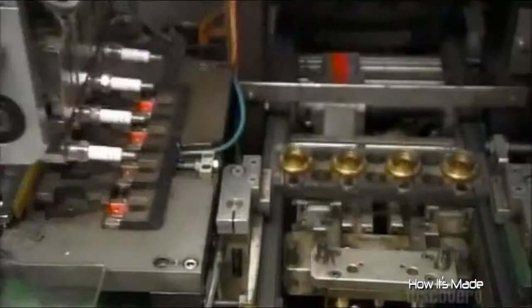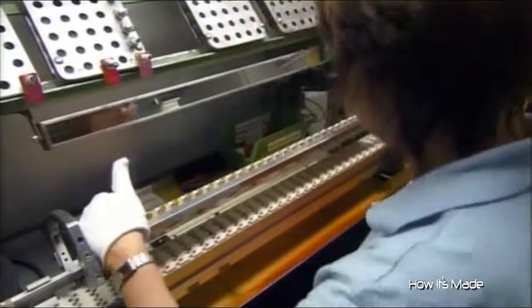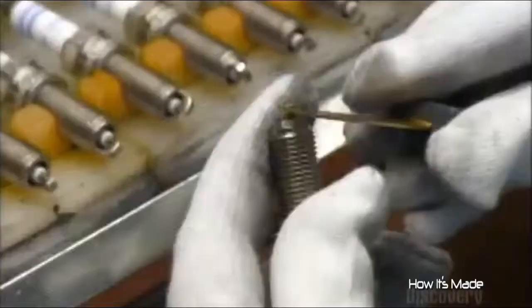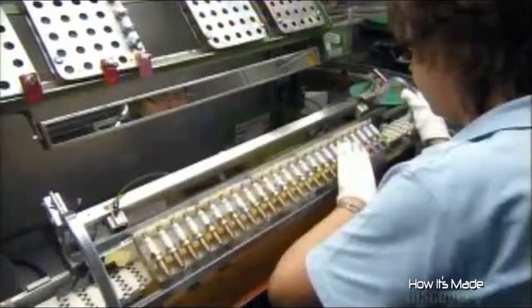The robot then collects the spark plugs and sends them down the line. It's time for an inspection. She looks for imperfections in the glaze, the inscription, and the nickel plating. She measures the space between the two electrodes before sending them over to the packaging department. And now, these spark plugs are ready to keep your engine firing on all cylinders.